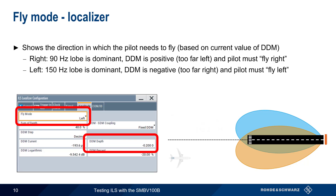If fly mode shows left, then the 150 hertz lobe is dominant, DDM is negative, and the pilot has to fly left to center the aircraft with the runway centerline.